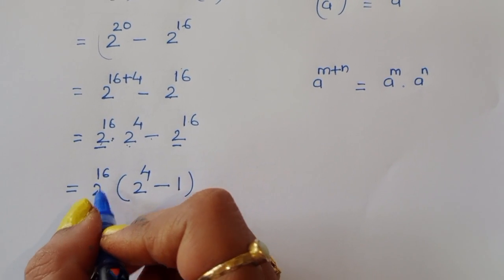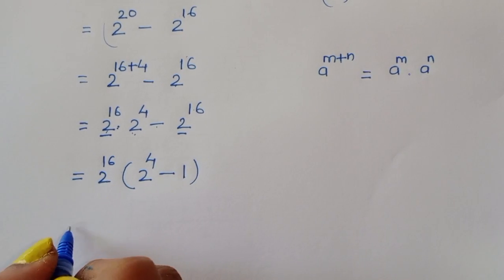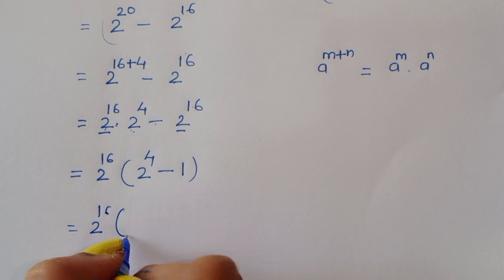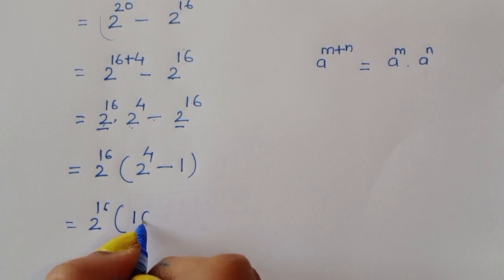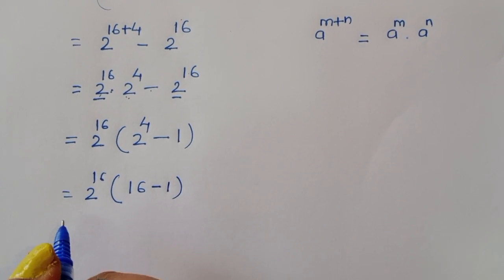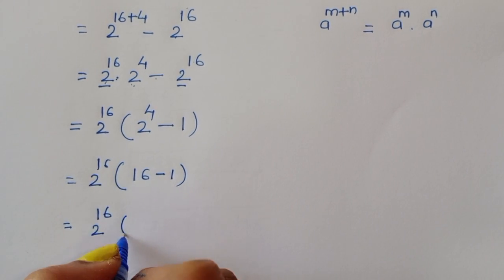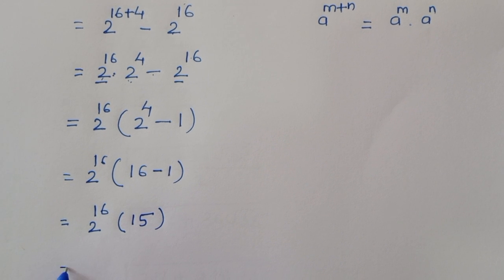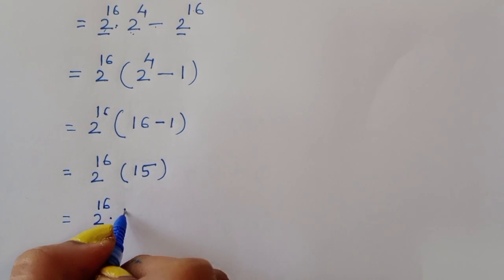We now have 2 power 16 times 2 power 4 minus 1. Since 2 power 4 is 16, this becomes 2 power 16 times 16 minus 1, which is 2 power 16 times 15.